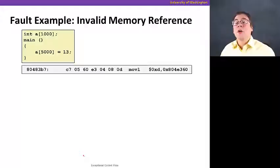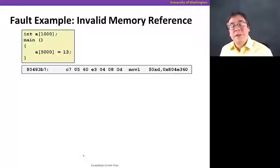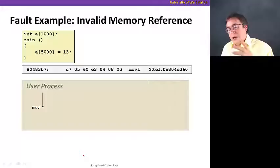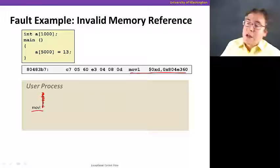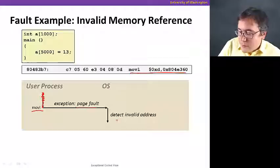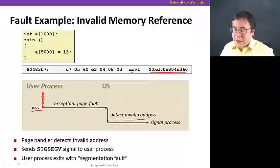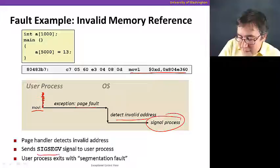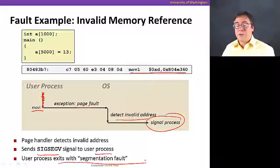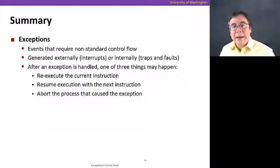If you touch a bad memory location — say you have a pointer problem in your code — that could be an invalid memory reference. If you touch a piece of memory that's not mapped and the OS cannot find a valid mapping, it has to abort your execution. So your move instruction leads to a page fault; the OS determines that the address is not only unmapped but invalid. It signals the process with a SIGSEGV, and the user process exits with a segmentation fault error.